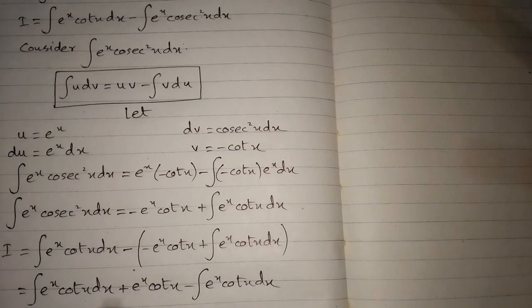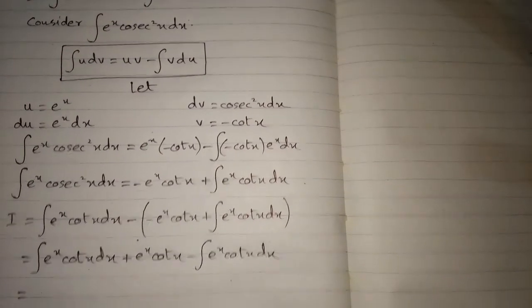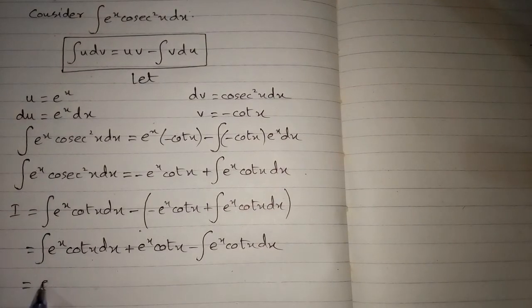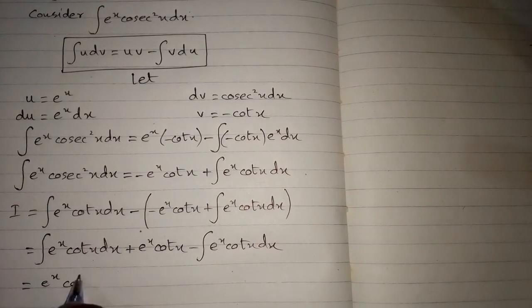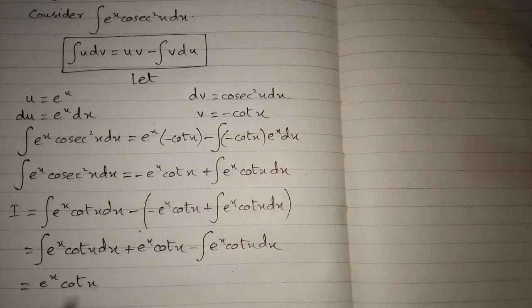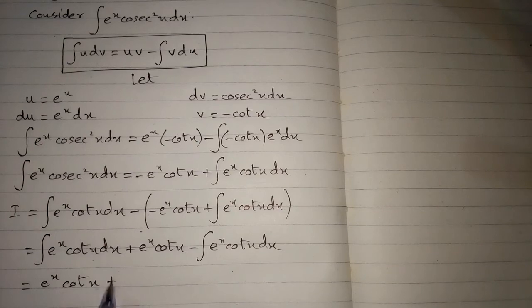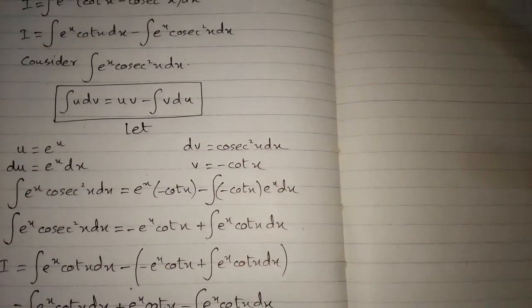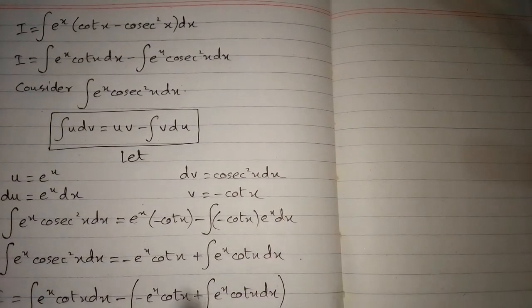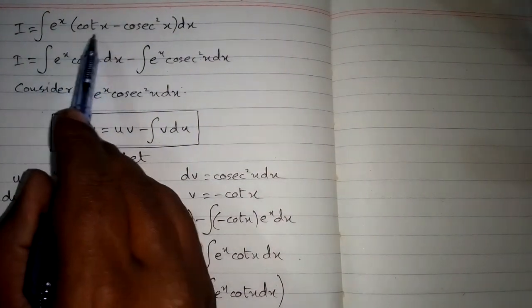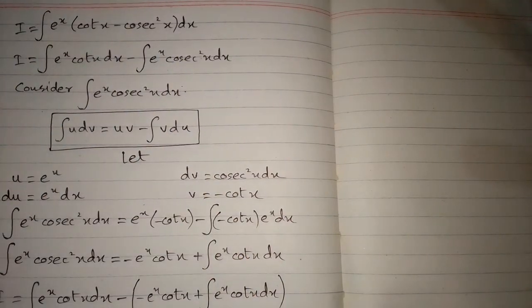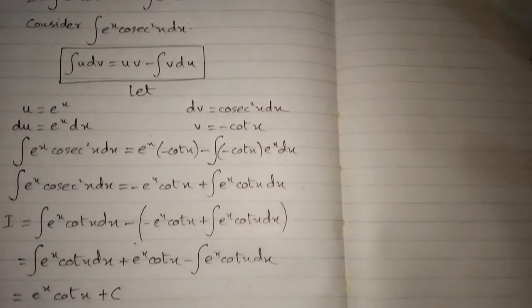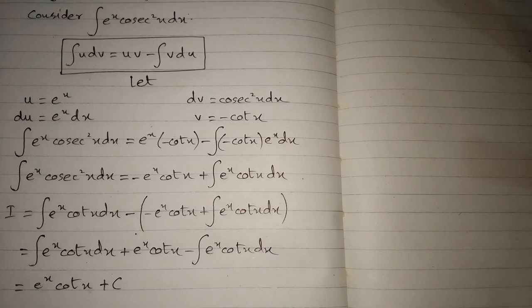These two integrals are the same and they cancel by subtraction, leaving us with e to the power x cot x. So the required integral of e to the power x times cot x minus cosec squared x dx equals e to the power x cot x plus c, where c is the constant of integration.